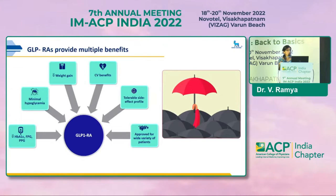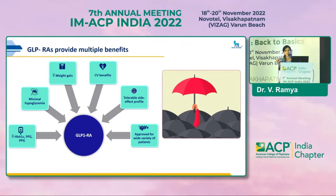We have GLP-1 analogs, which we have been using for the past 10 years. But only after the results of major landmark trials like the LEADER trial on CV outcomes did they become a game changer in diabetes treatment, representing a paradigm shift from a glucocentric to a cardiocentric approach. Besides managing glycemic control, GLP-1 analogs have a holistic approach: CV benefits, promotion of weight loss with less hypoglycemia, approval for a wide variety of patients including the elderly, and they clearly show decreased mortality and decreased progression of CKD.